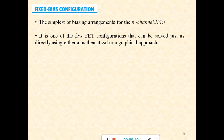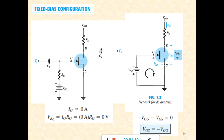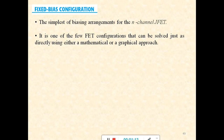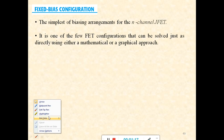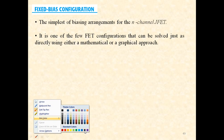We'll quickly go through the fixed bias configuration again in case anybody was absent. It is the simplest form of the biasing arrangement for the n-channel JFET. It is one of the few FET configurations that can be solved directly either by using the mathematical or the graphical approach.